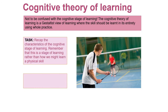Can you recap the characteristics of the cognitive stage of learning? Remember this is the stage of learning rather than how we might learn a physical skill. Just have a recap in your notes of what whole practice is and the types of skills we would use whole practice for - are they going to be low organisation, high organisation? Do they have a lot of subroutines? Are they self-paced or externally paced? All those different classifications of skills. Recap on your notes to help with this cognitive theory of learning.